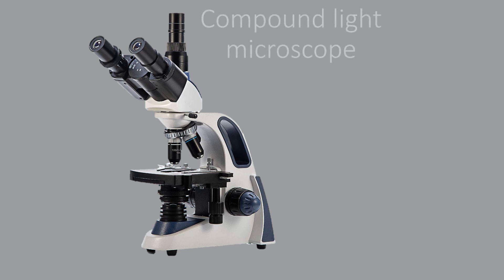In a compound light microscope, the light source lies under the specimen, so they are used to see transparent specimens.